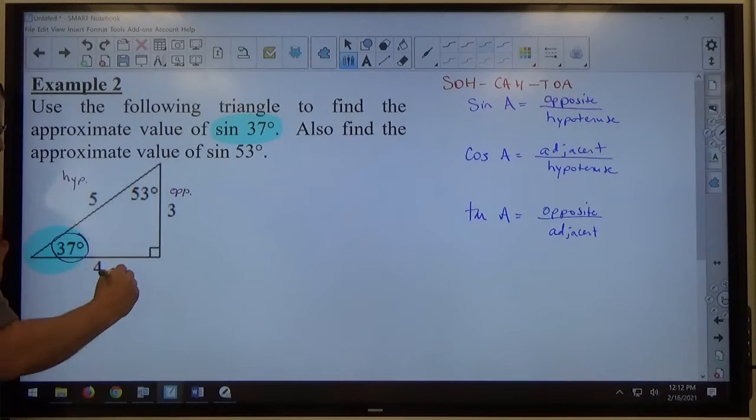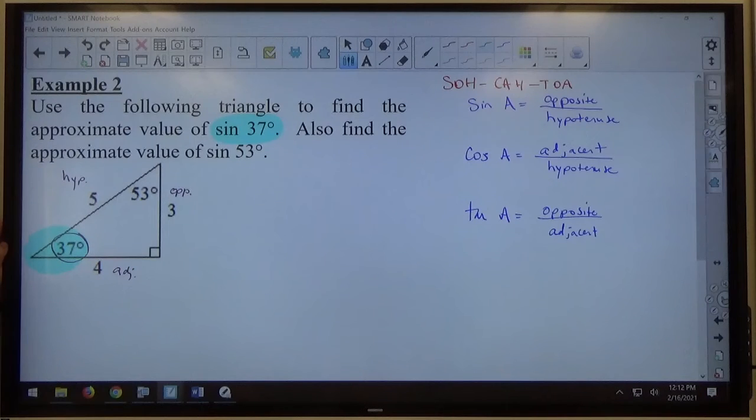For 37, and the other side, four, must be the adjacent. So I would expect to see something looking like that on your paper for this problem in order to evaluate the sine of 37.